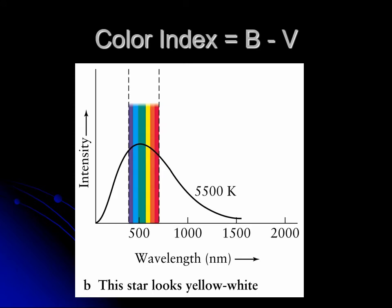A star like this, about 5,500 Kelvin, something like that, it peaks near the middle of the visual spectrum. You have all the different colors in there. So that's going to look kind of whitish to you. And so the B and the V are going to be almost identical. So B minus V is going to be close to zero.